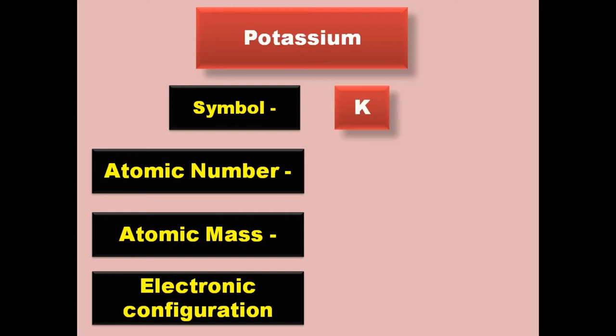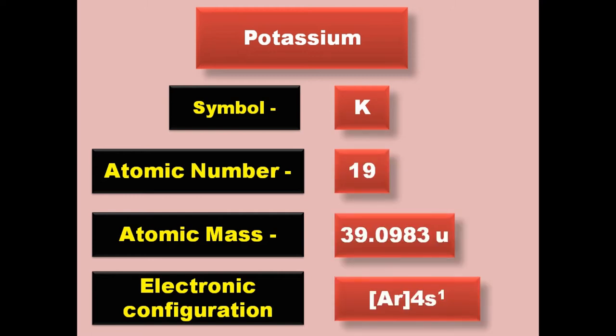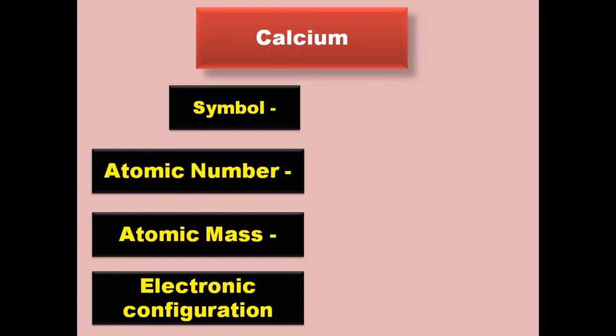Potassium has symbol K, atomic number 19, atomic mass 39.0983, electronic configuration [Ar] 4s1. Potassium is an alkaline metal and exists in solid form at room temperature.